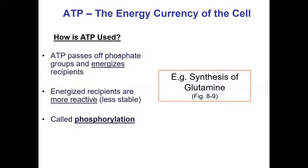You can check out figure 8-9 in the textbook. It says ATP passes off a phosphate, energizes one molecule, and allows a reaction to occur. I'm going to switch now to the whiteboard and draw some chemical reactions.